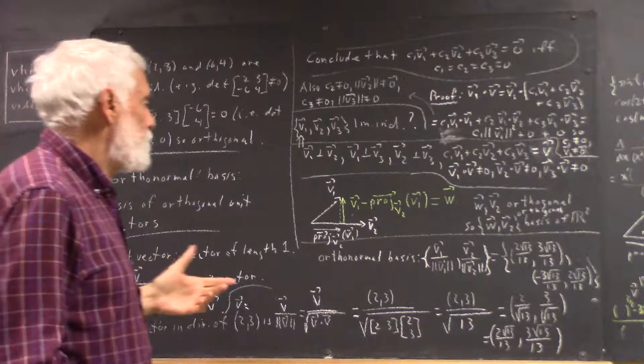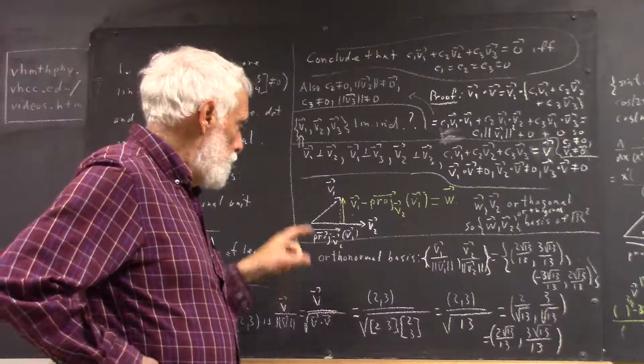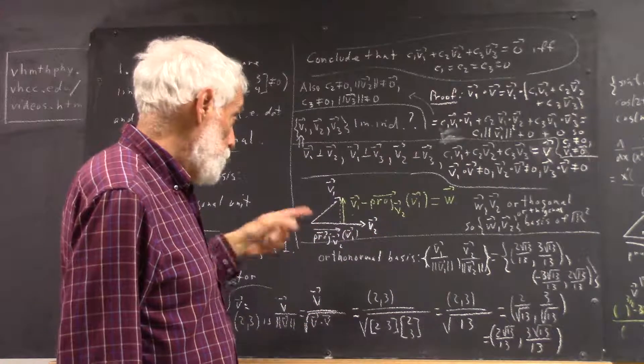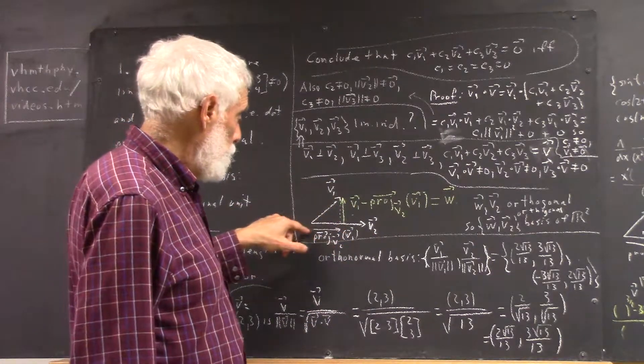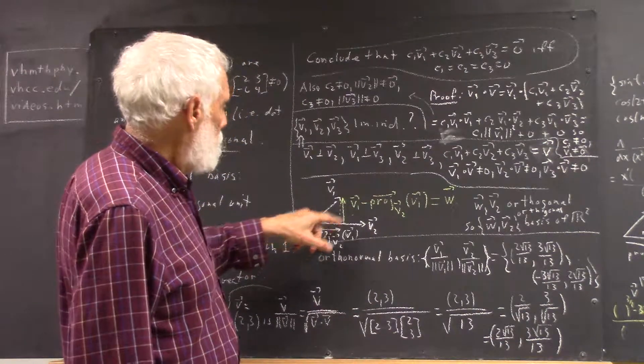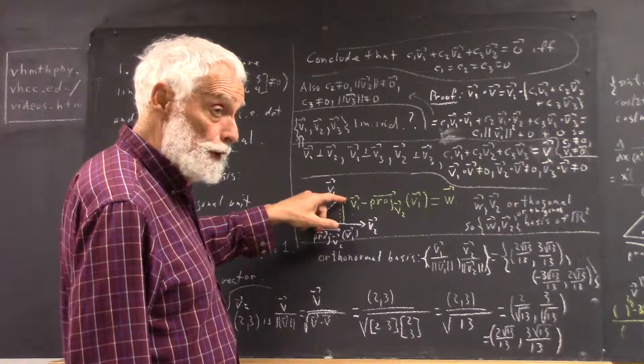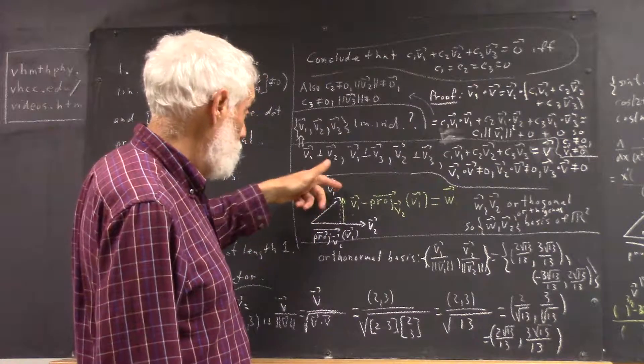Okay, well, anyhow, in this case, we see very clearly that the V1 vector, that the projection vector plus this vector here in green, we get V1.